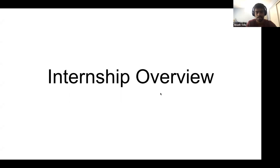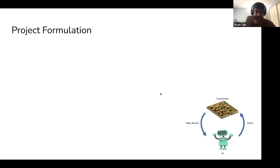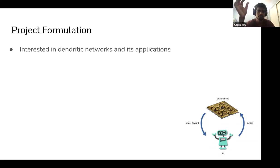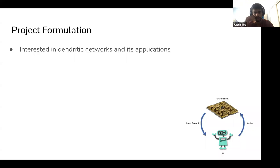In terms of the actual internship project, for the first month I worked on different mini projects that introduced me to a variety of ideas. One idea I was really interested in was dendritic networks and its applications. It incorporated core ideas of the thousand brains theory like sparsity, but also took it to another level by incorporating the dendritic aspect of neuroscience.